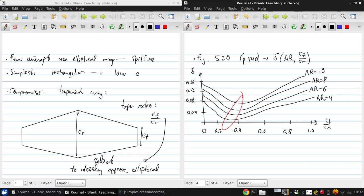And so, regardless of aspect ratio, it's possible to choose a correct taper ratio to get the lowest possible delta and therefore the highest span efficiency. And tapered wings are also relatively easy to manufacture, and so most aircraft actually use tapered wings, whether they're swept or unswept.